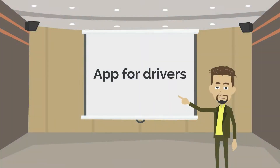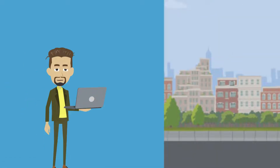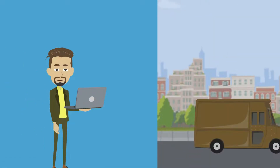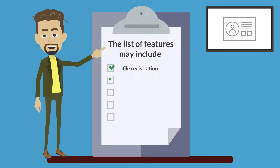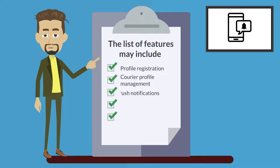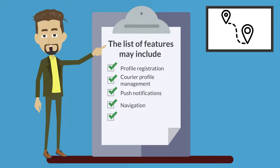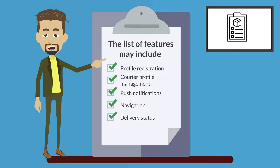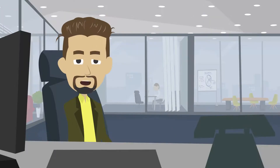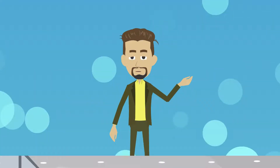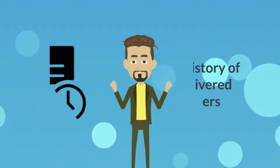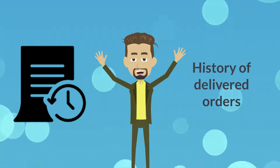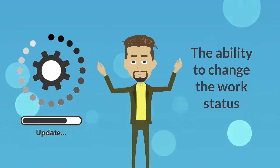The app for drivers should allow couriers to track orders and deliver them. The list of features may include profile registration, creation of a courier profile, push notifications, navigation, and delivery status. You can also add additional features such as analytics with all details of fulfilled orders, history of delivered orders, and the ability to change work status.